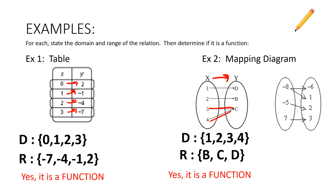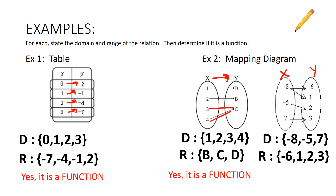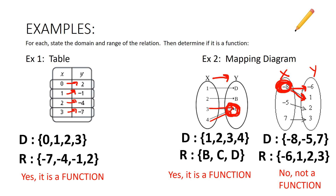Now let's see what is NOT a function in a mapping diagram. We have x values of negative 8, negative 5, and 7, and y values of negative 6, 1, 2, and 3. The biggest difference here is that negative 8 has two arrows going to two different range values — negative 6 and another. The domain must be paired with exactly one range value, so negative 8 being paired with two values means this is NOT a function.